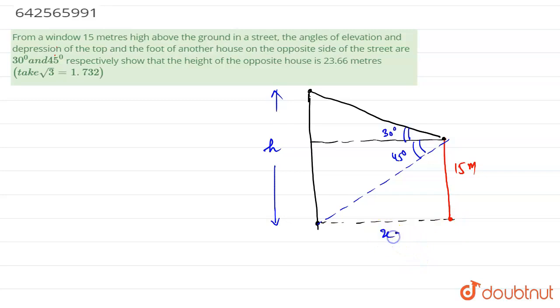Now taking this distance as x. If this angle is 45, this angle will also be equal to 45, and this height will be equal to h minus 15. So now let's begin our work.